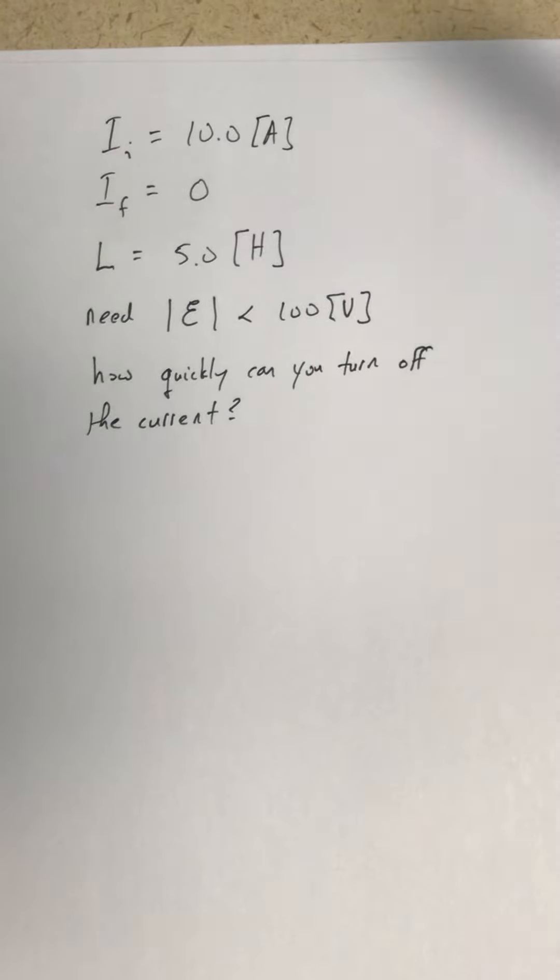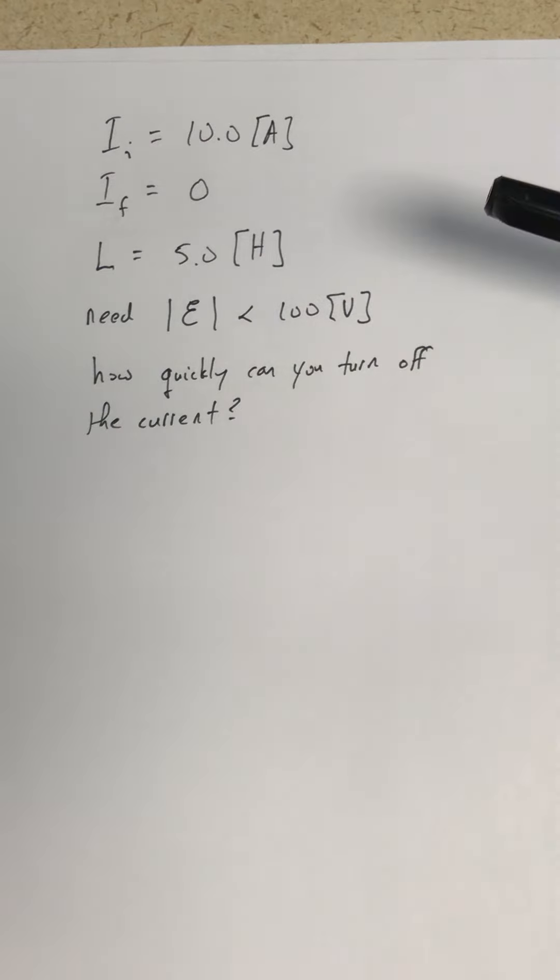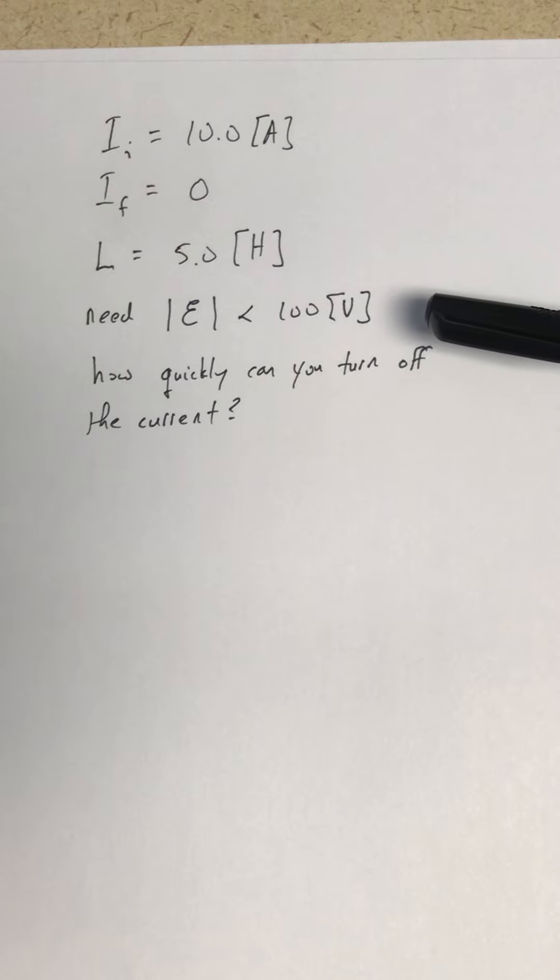We have a circuit that initially has a current of 10 amps flowing in it. We want to turn it off. This circuit has an inductance of 5 Henrys and we have the constraint that we don't want an induced EMF bigger than 100 volts because it could damage the circuit. So how quickly can we turn off the current in that circuit?